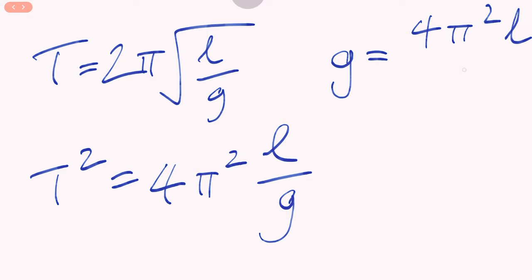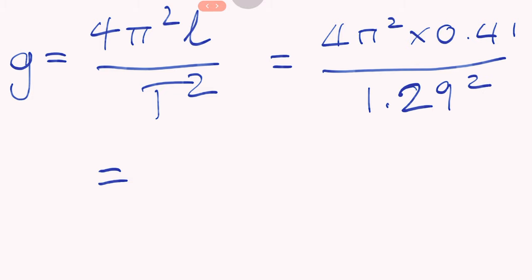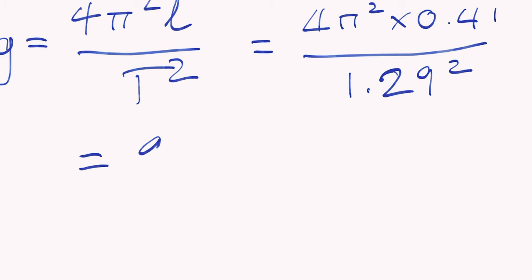And now rearrange for g, so that gives me 4π²L, which is the length of the pendulum, over T². Now input my numbers, obviously converting length into meters before I use it. Now calculate, and I get 9.73 meters per second squared.